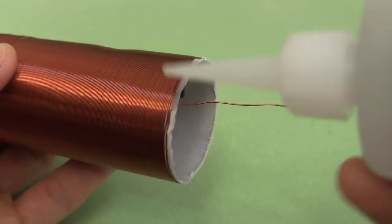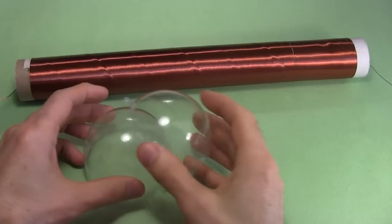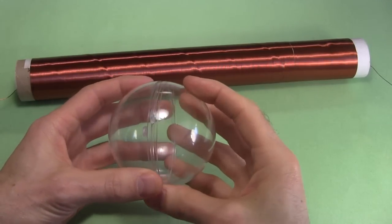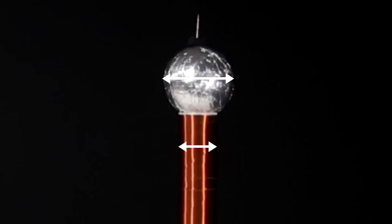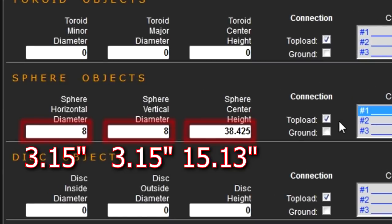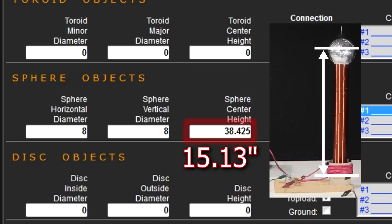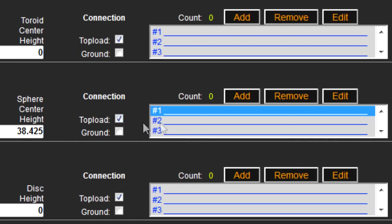For the top load, I'm using this 8 centimeter in diameter Christmas tree ornament from a craft store. Pretty much any round ball will work. A rule of thumb is that it should have a larger diameter than the secondary coil, but make sure you include its dimensions in the online Tesla coil calculator, like I did. The sphere center height is from the bottom of the Tesla coil to the center of the sphere. Once you've filled it all in and selected top load, click on add to add it to the list of sphere objects.